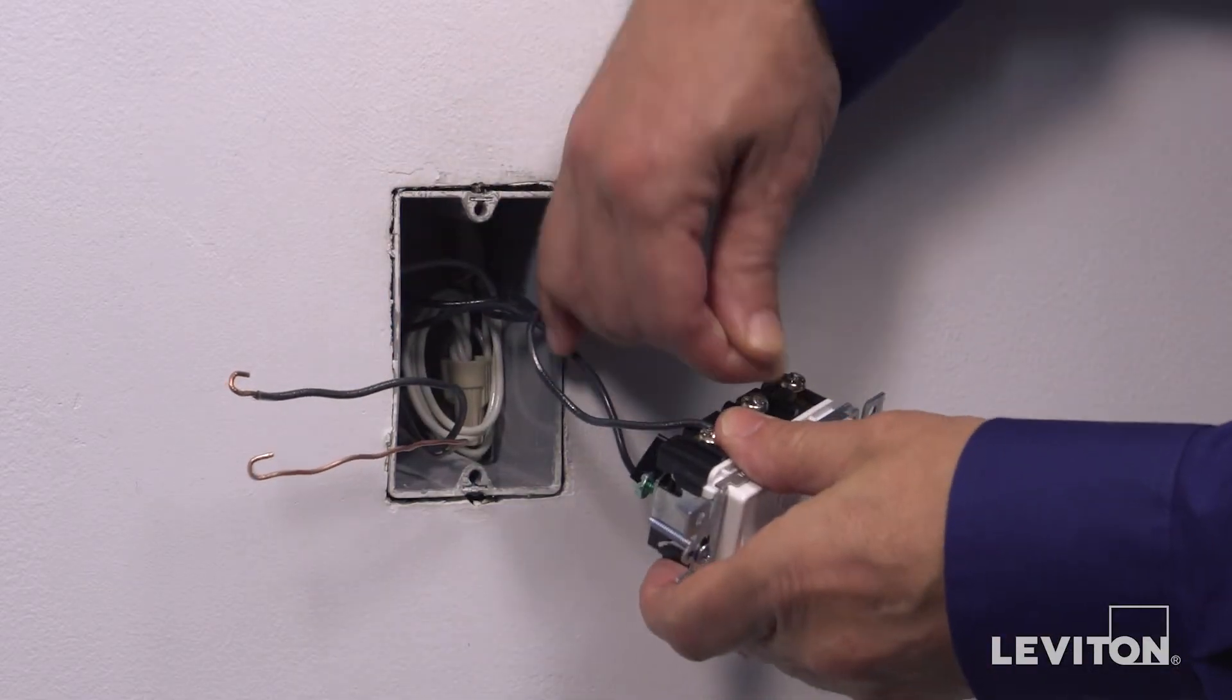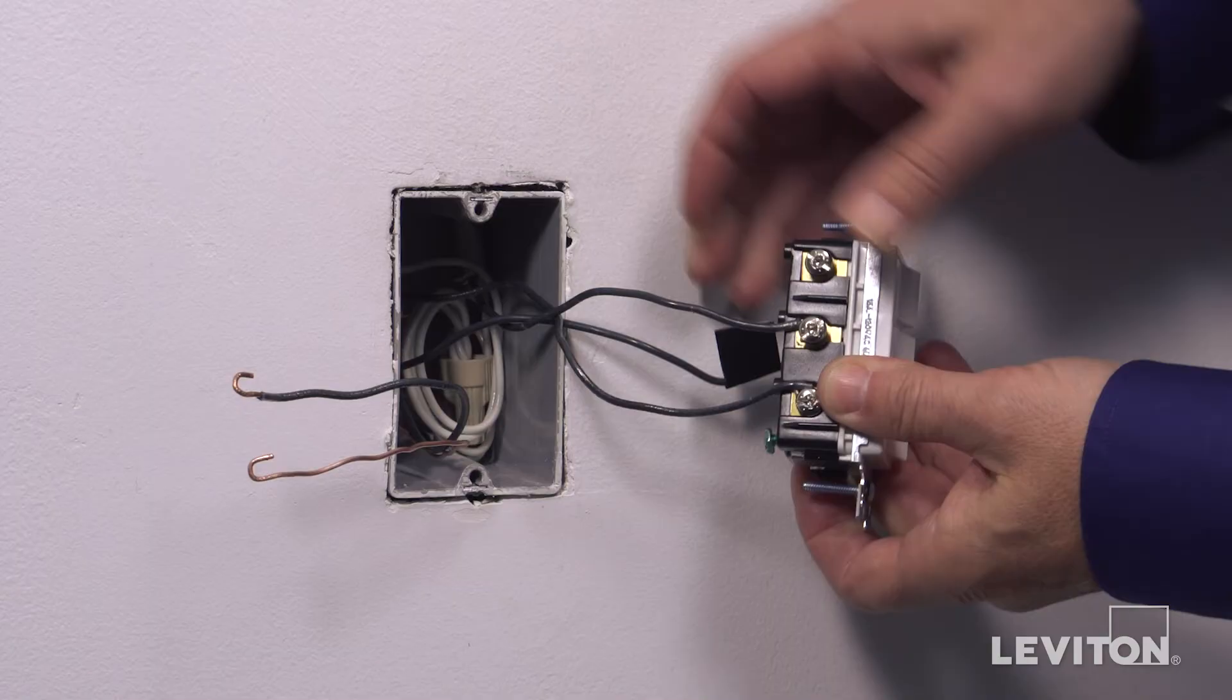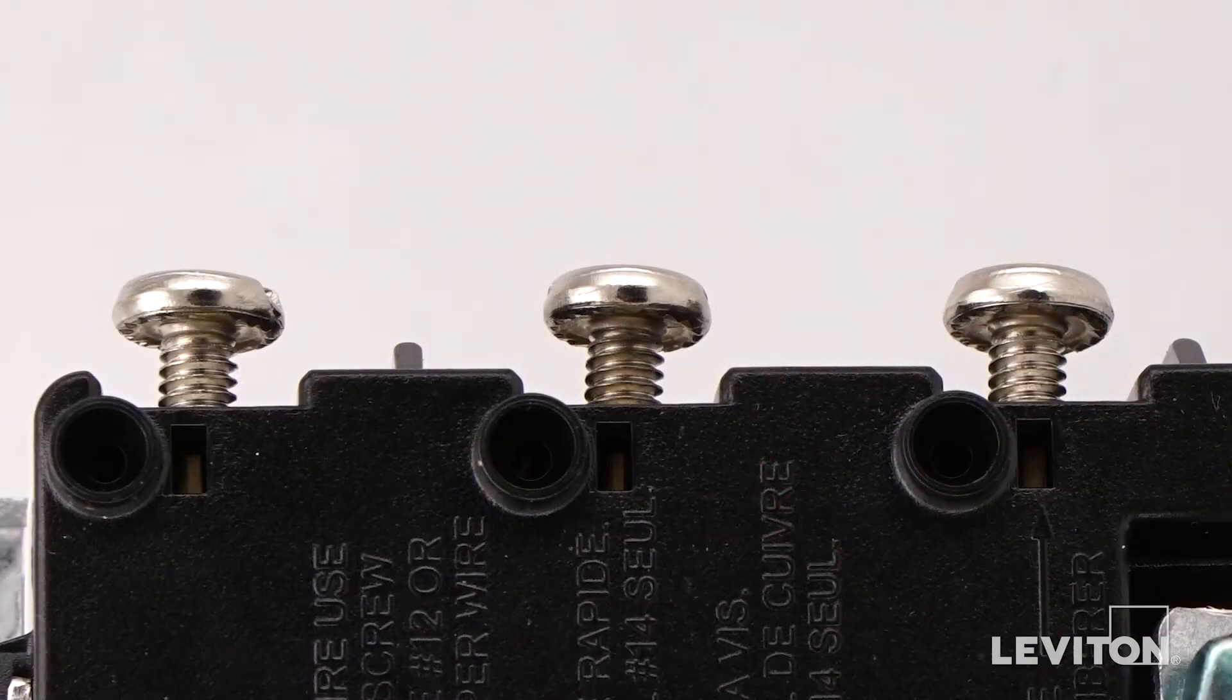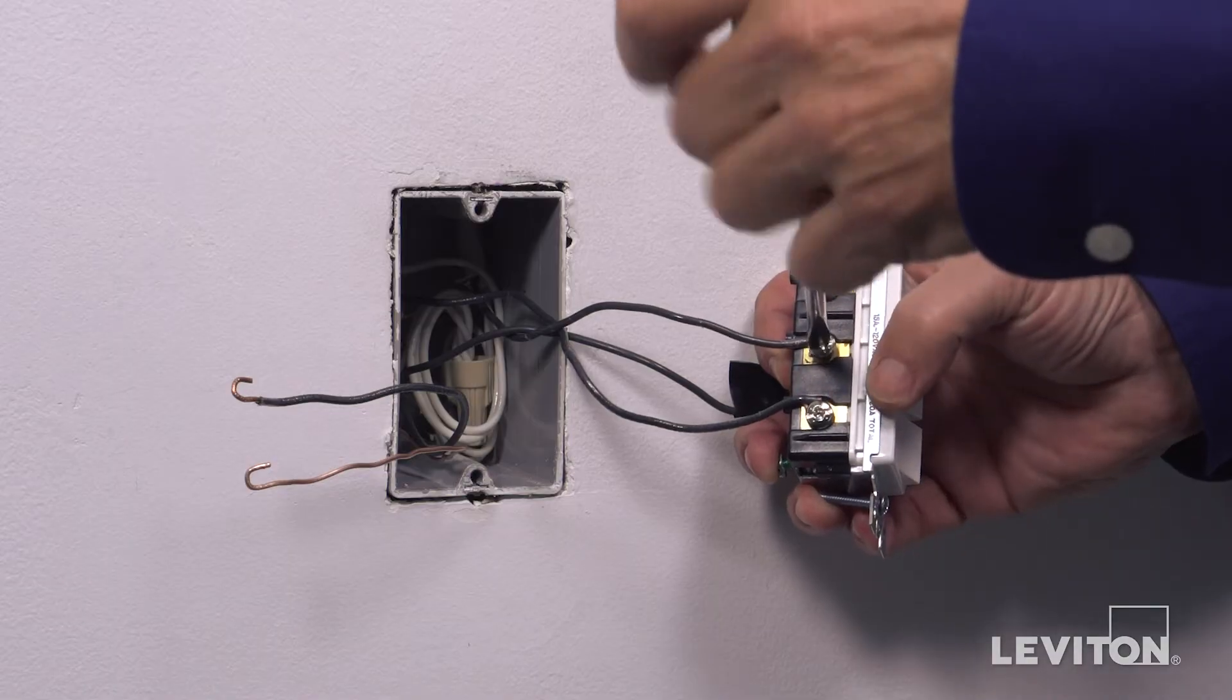Loop another black wall box load wire clockwise three-quarters of a turn around the remaining silver terminal screw. Tighten firmly.